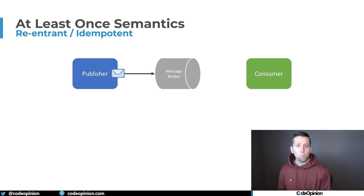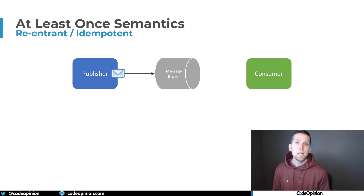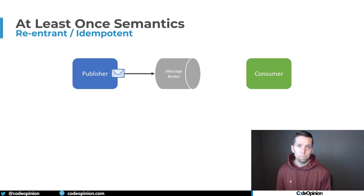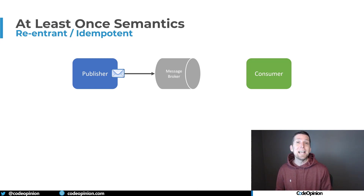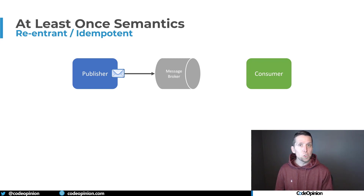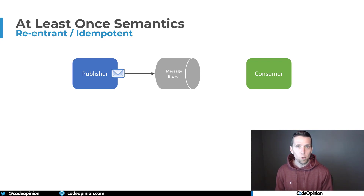Under either scenario — whether it's the broker re-delivering a message or the publisher publishing the same message more than once — you need your consumers to either be idempotent or keep track of which messages they've already processed. Under certain circumstances your consumer may be naturally idempotent, meaning processing the message more than once has no ill consequence. In other situations, it may have seriously negative impacts on your system.